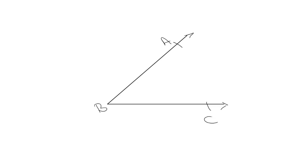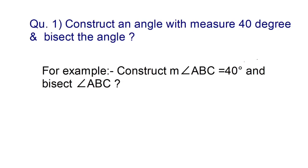To understand the concept of Angle Bisector, solve the following examples. Here, construct an angle with measure 40 degrees and bisect the angle. Let us take an example: Construct angle ABC equal to 40 degrees and bisect angle ABC. So, let's start.